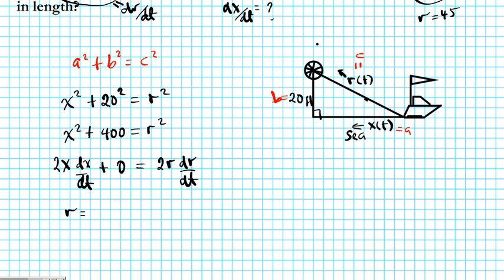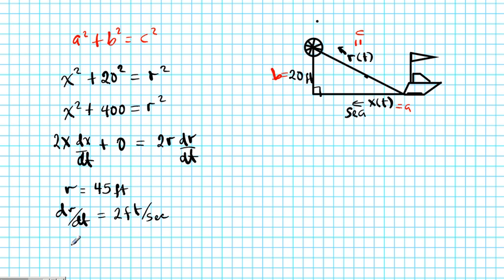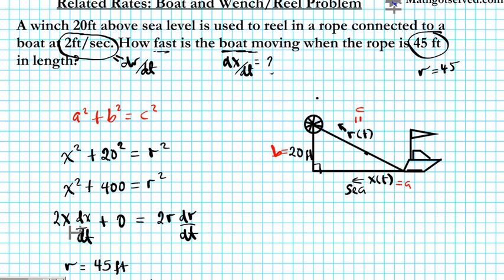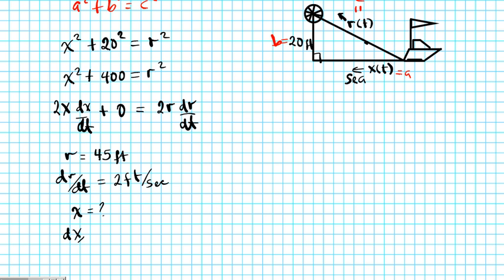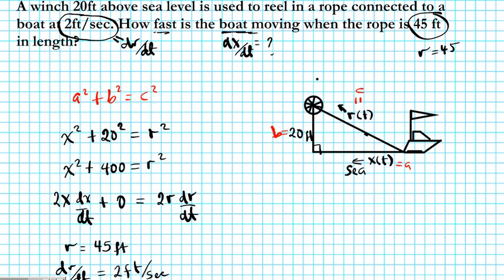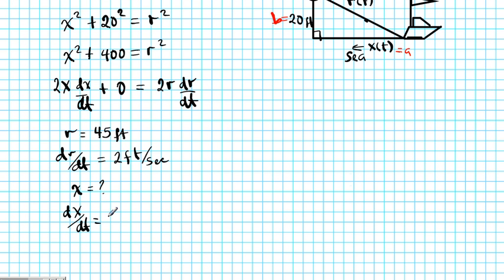Let's list everything we have. We know r = 45 — looking for the speed of the boat when the rope is exactly 45 feet. The movement of the rope is constantly 2 feet per second. We also need x in this formula. How far is the boat? It's not indicated, so we don't know what x is. And dx/dt — how fast is the boat moving — that's what we are asked to find, so we don't know that either. We have one equation and two unknowns — that's too many. So which one can we find in order to solve the equation?